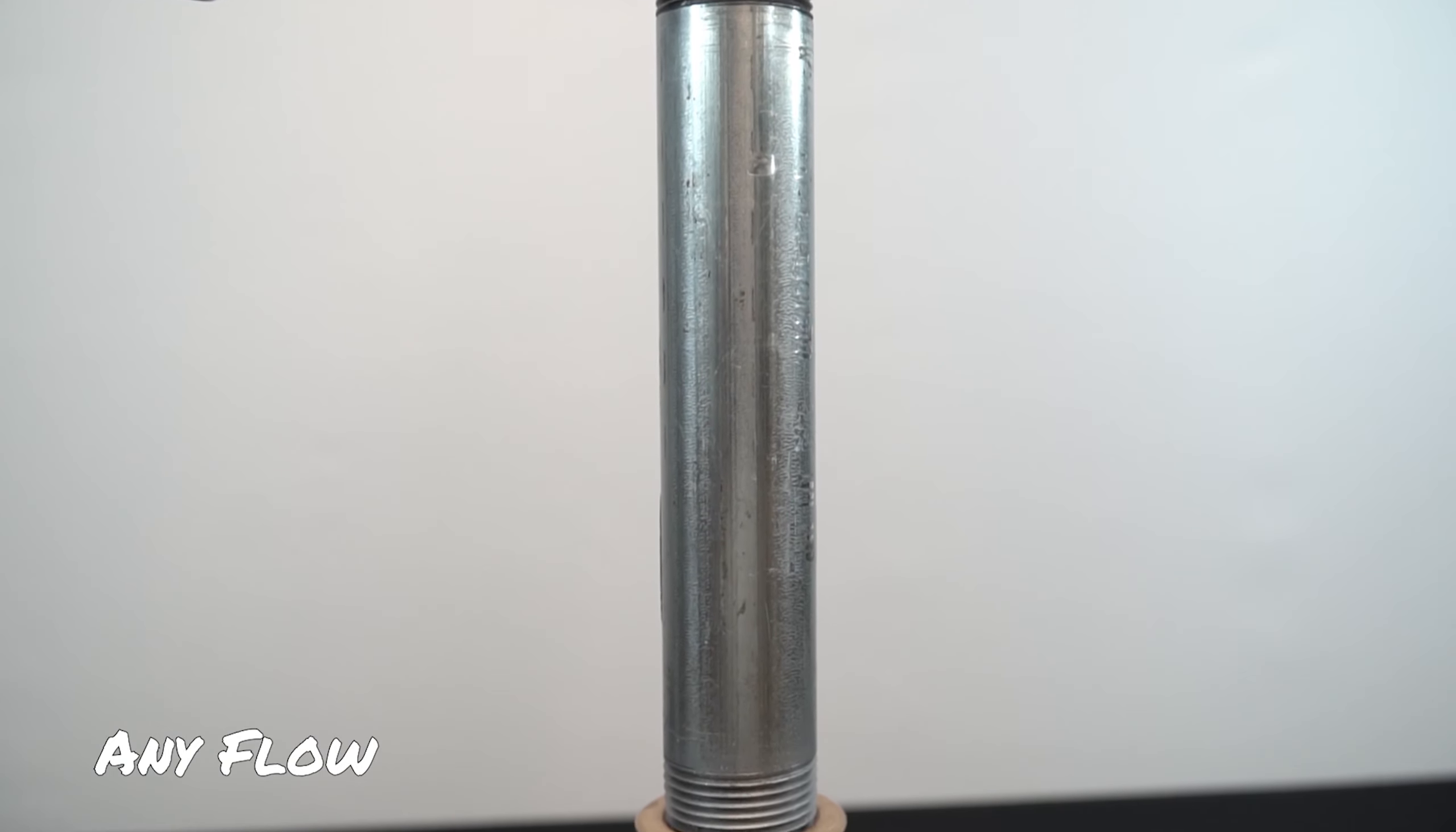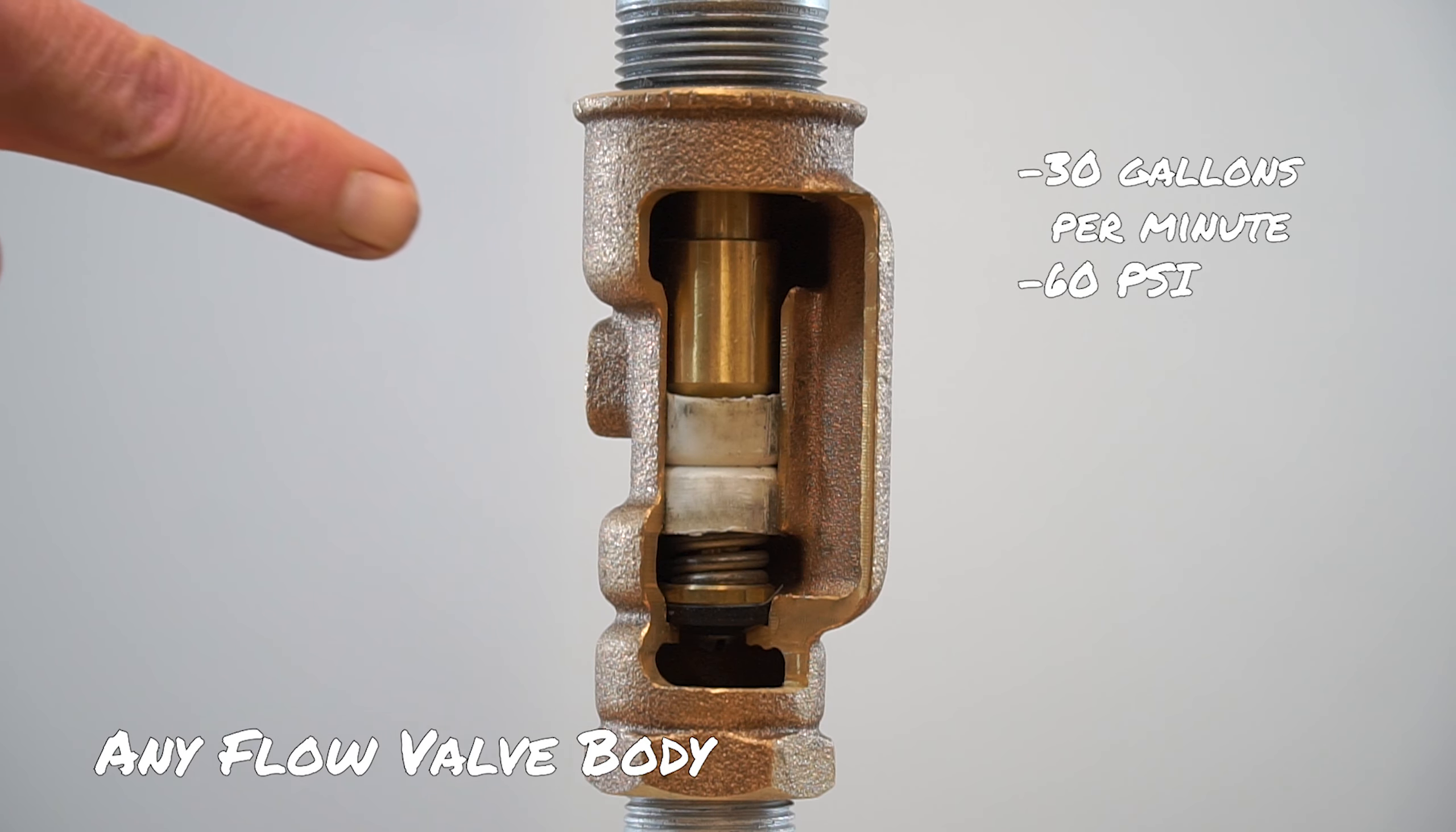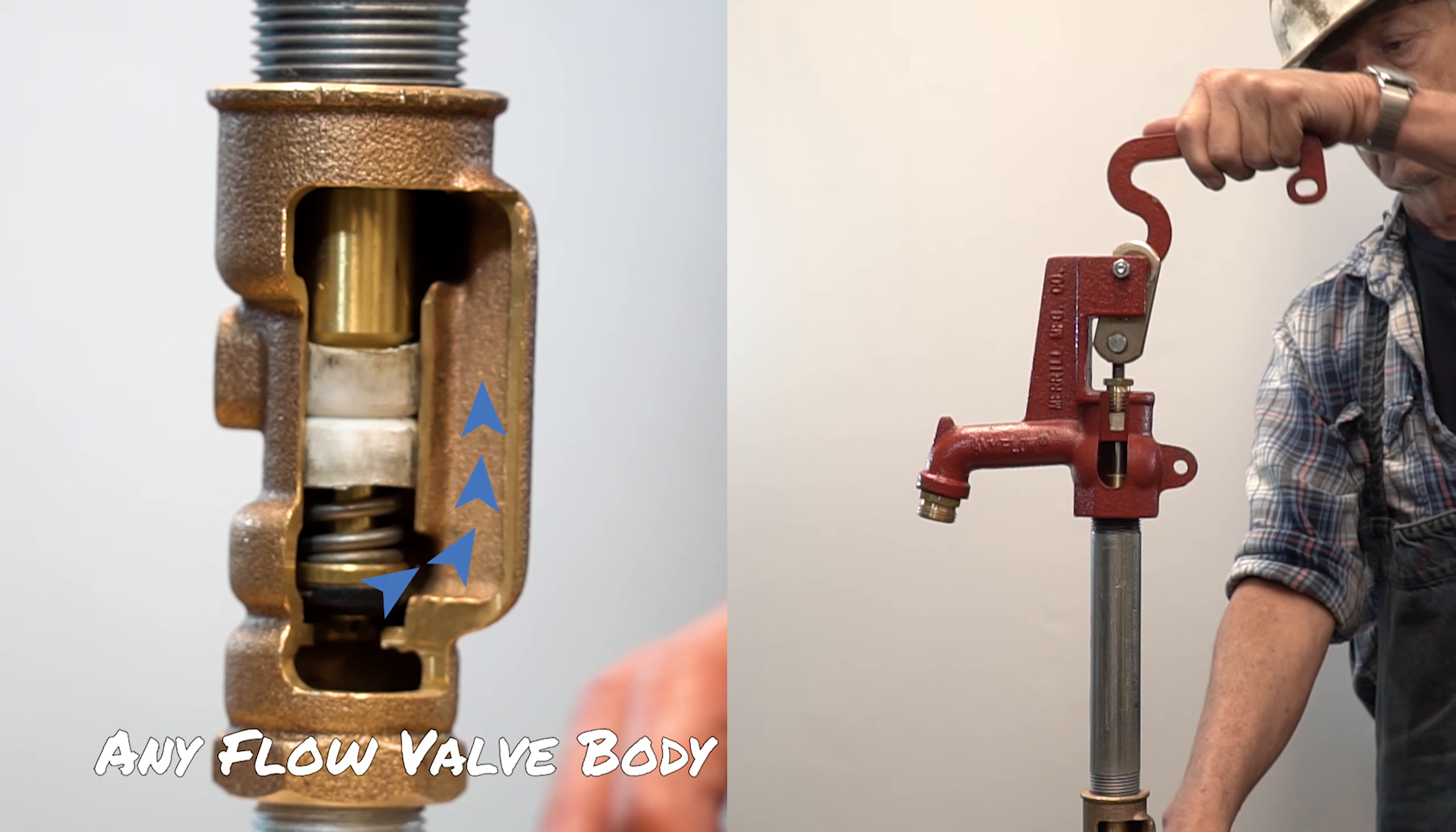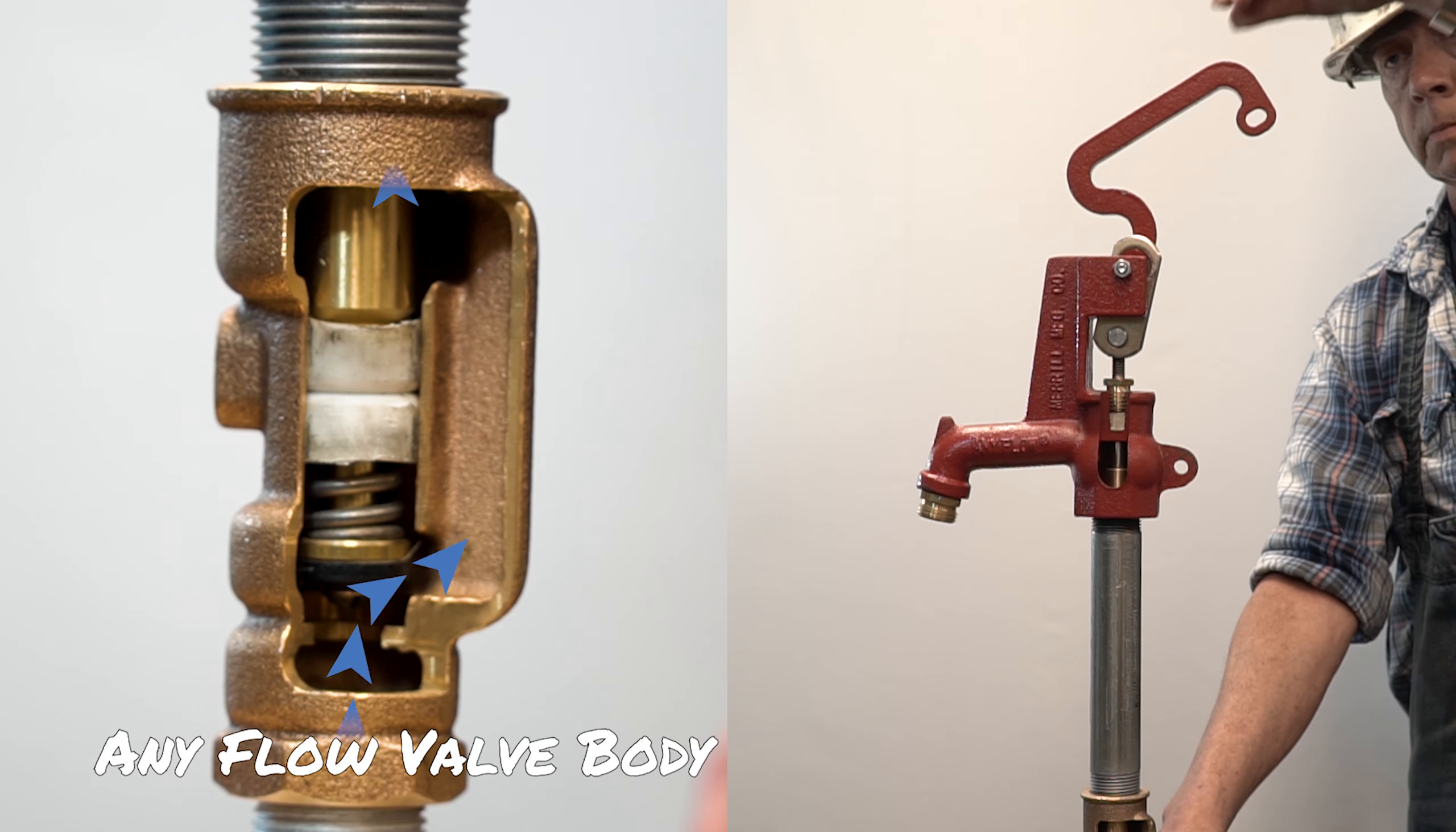Alongside the unique features of the Anyflow Yard Hydrant, our high flow rate valve body provides a flow rate of 30 gallons per minute at 60 psi. The flow rate can be quickly adjusted by the position of the lever, ranging from a full force flow to a small trickle.